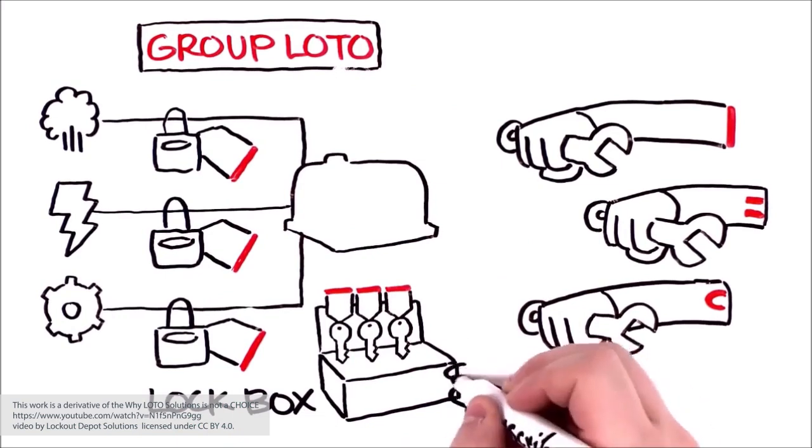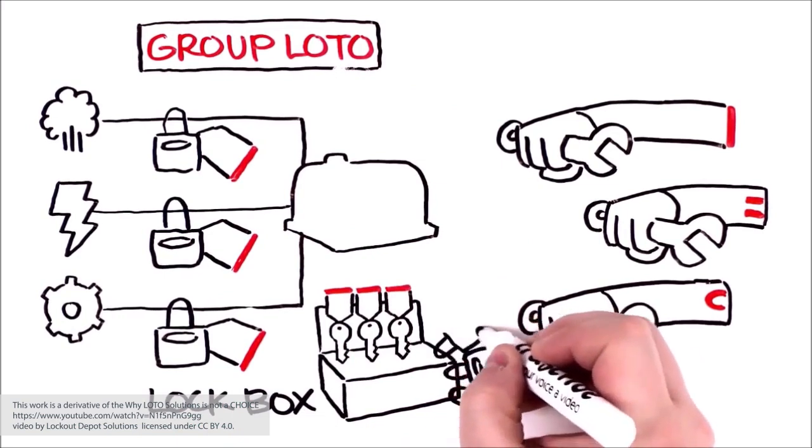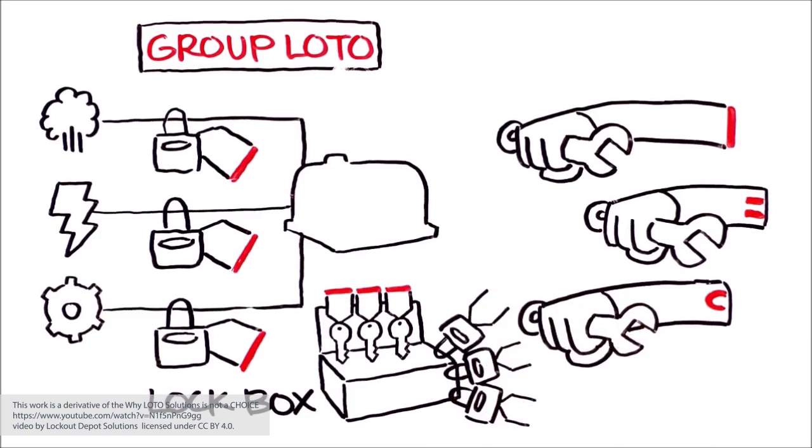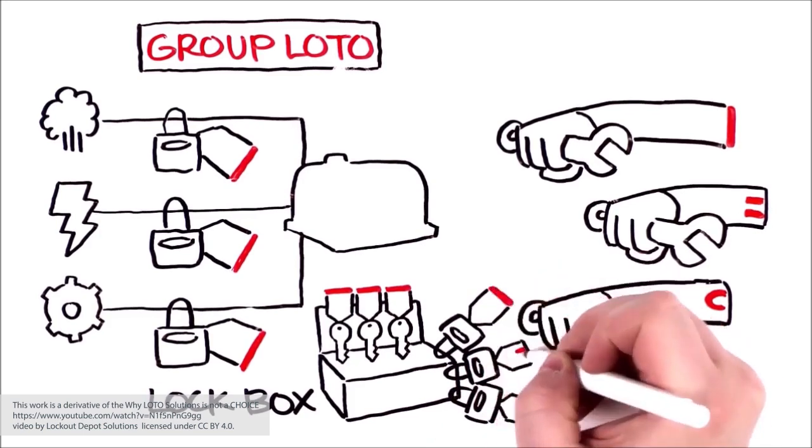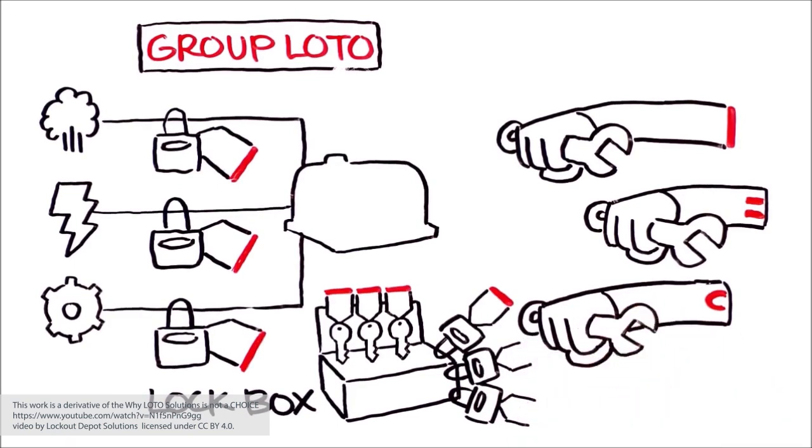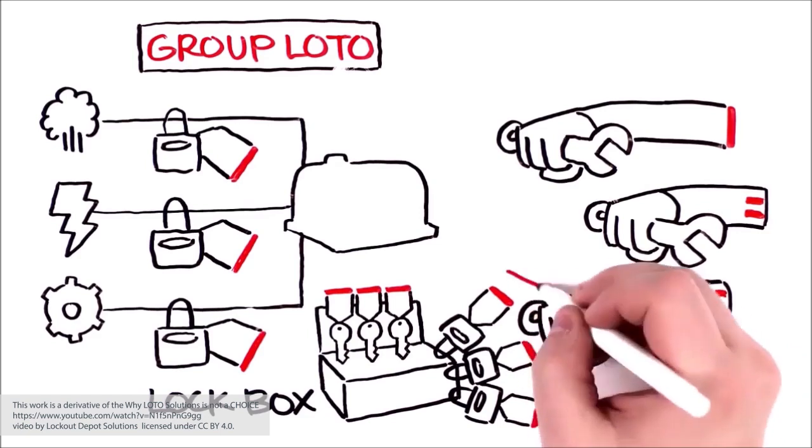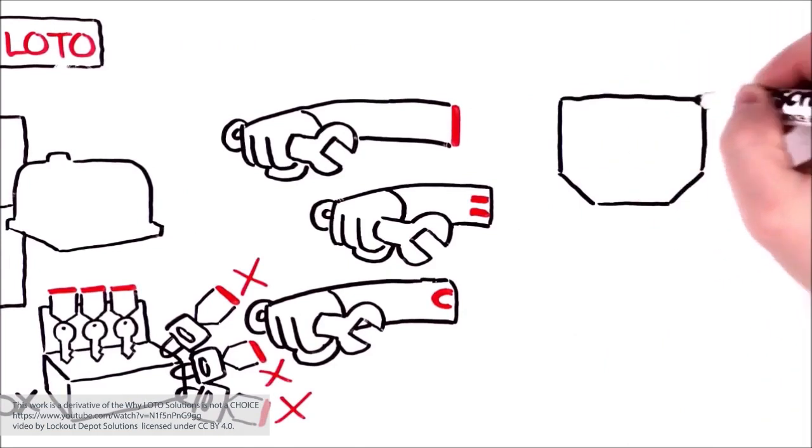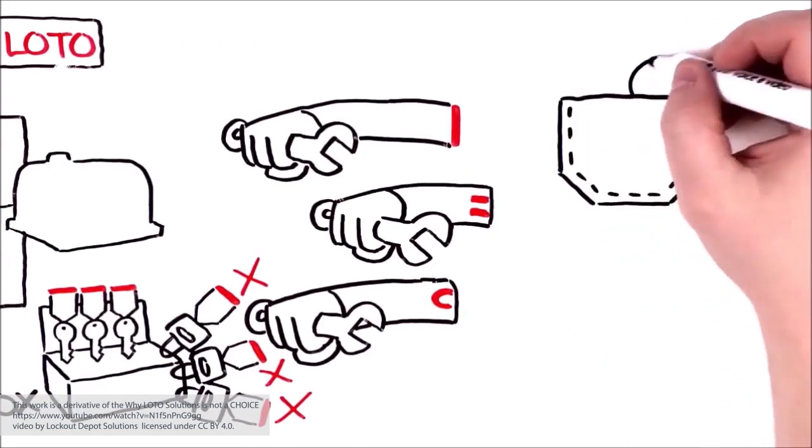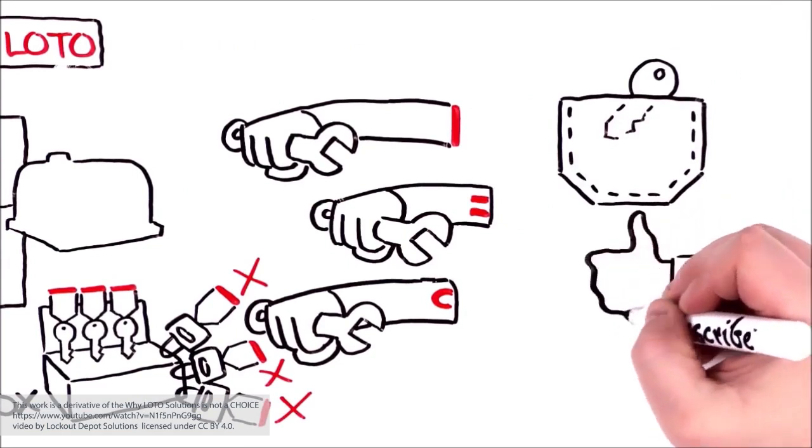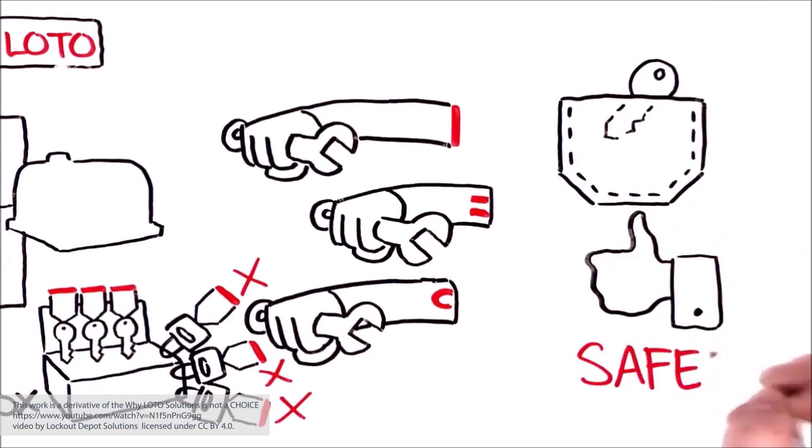Then all employees working on the equipment place their own lock on the lock box while working on the equipment. But in these cases, each person must put their own lock on the energy isolation device. Under no circumstance is it ever acceptable for one person to lock out equipment for another. Group LOTO has many variations. Just remember, check your pocket. If you've got the key in there to a lock which controls the ability to re-energize the equipment, then you're protected.